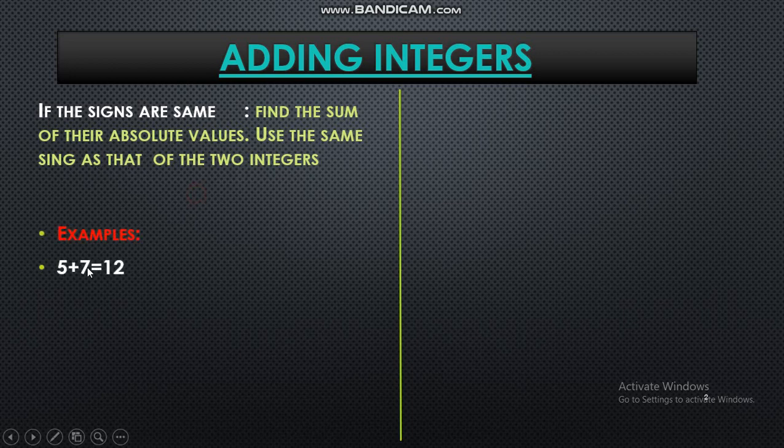For example, if I am adding 5 plus 7, now both are positive integers. So my answer is also a positive integer, 5 plus 7 is 12. Now next example, minus 15 plus minus 7. Now see here, both are negative integers. So answer is negative and what is addition of numbers 15 plus 7? It is 22. So answer is negative 22.